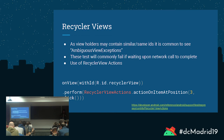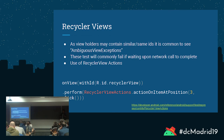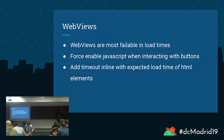Recycler views tend to be the most problematic for testing. You'll commonly get an 'ambiguous view matchers' exception, and these tests will commonly fail if you're waiting on network calls — so this is a good case to consider mocking. I recommend using RecyclerViewActions. Here's an example: onView with ID of the recycler view ID, performs a click on the third item in the list. There are many more methods available — you could also scroll to a specific position. This is a lot easier than writing it by hand with multiple matchers.